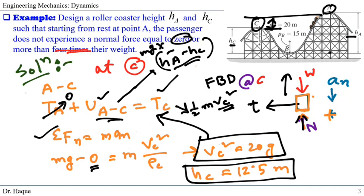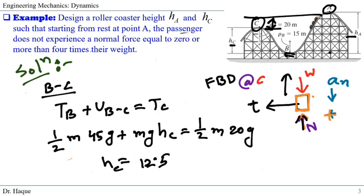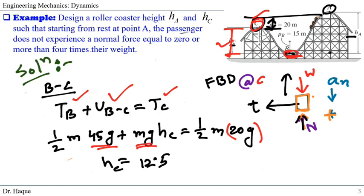We can verify by applying work-energy from point B to C. The displacement from B to C involves HC, and now TB is not zero — it's ½MVB² = ½M(45g). Using VC² = 20g for TC = ½M(20g), and work done is MgHC, solving gives HC = 12.5 m — the same result. The problem is solved.